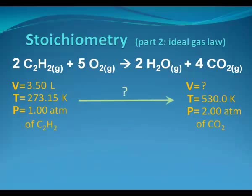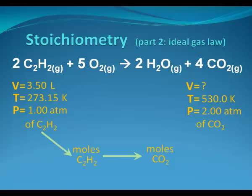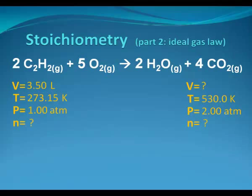How do we get from the volume and temperature and pressure of one gas to the volume and temperature and pressure of another gas? Well, if you've been following along with stoichiometry, you know that the pathway will be through moles. We're going to take volume, temperature and pressure and convert it to moles of acetylene. Then we'll use the chemical reaction to turn moles of acetylene into moles of carbon dioxide. And then finally we'll take the moles of carbon dioxide and turn it into a volume using the temperature and pressure. It's a three step process.